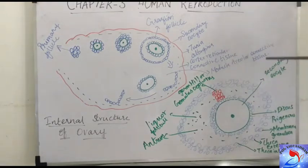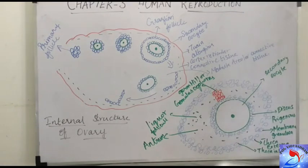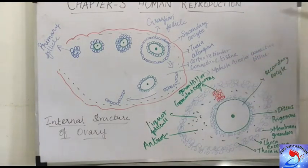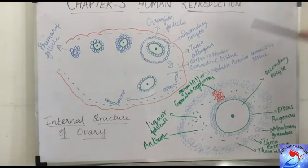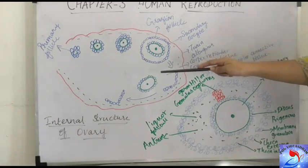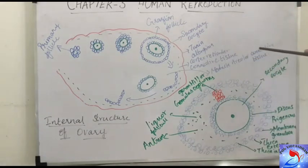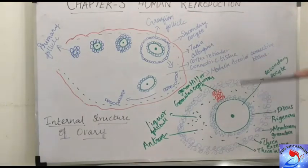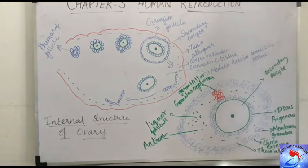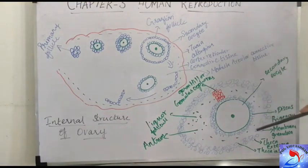The release of the egg occurs approximately on the 14th day of the menstrual cycle, which lasts from day 1 to day 28. On the 14th day, the Graafian follicle ruptures and releases the secondary oocyte. This completes the overview of the internal structure of the ovary. Next, we will study the hormones and glands related to the female reproductive system.